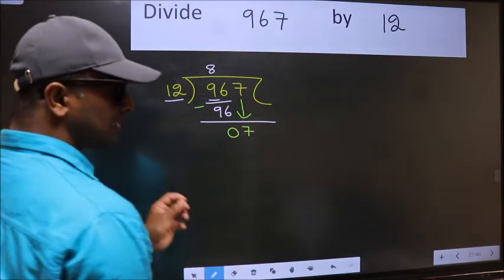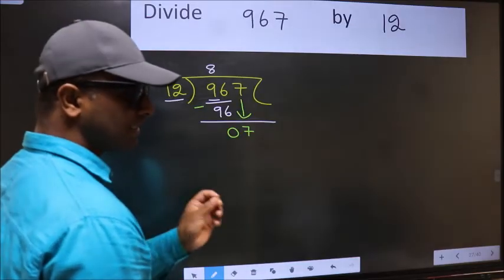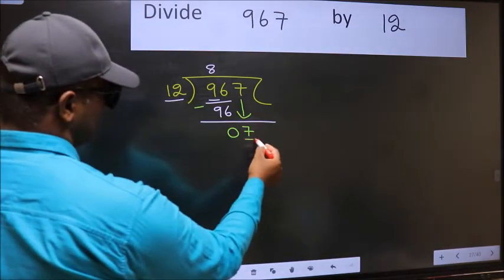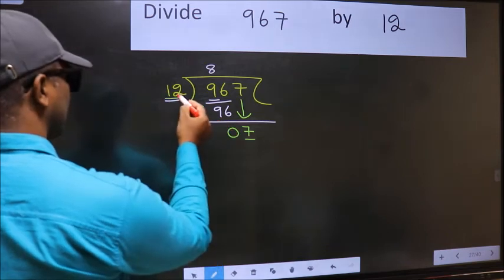After this step, the mistake happens. And the mistake is this. Here we have 7 and here 12.